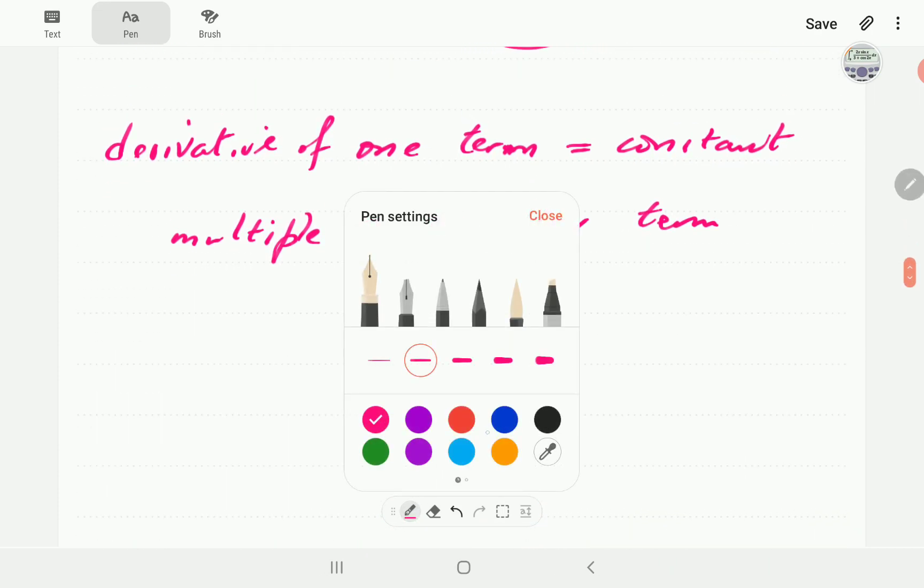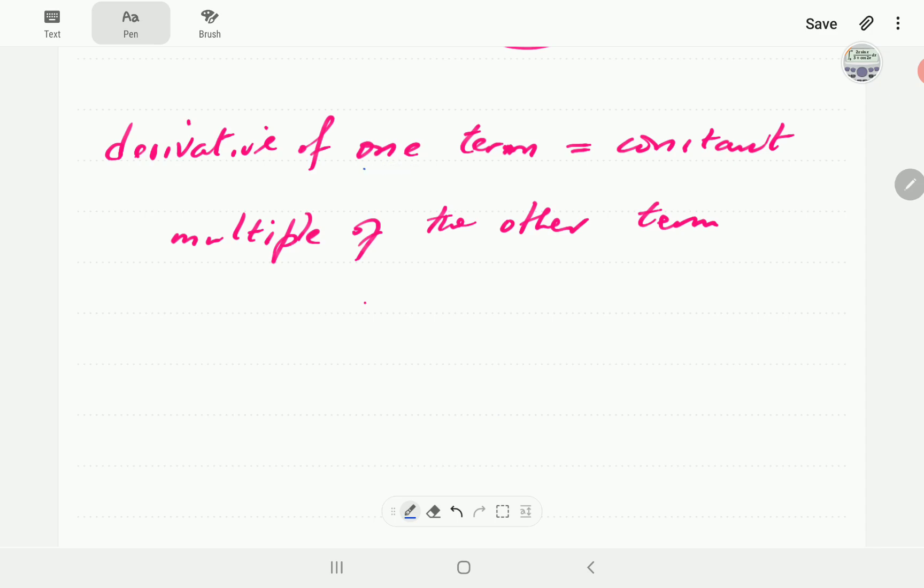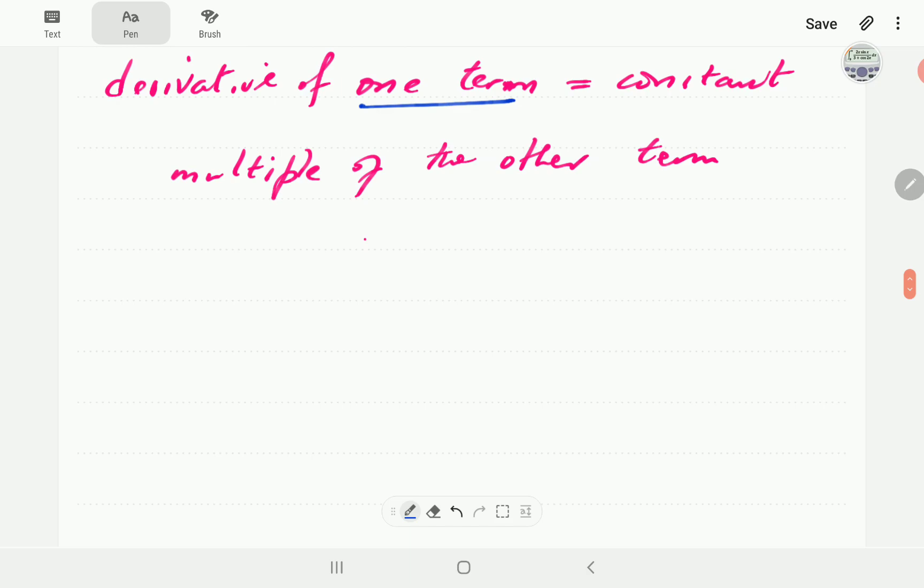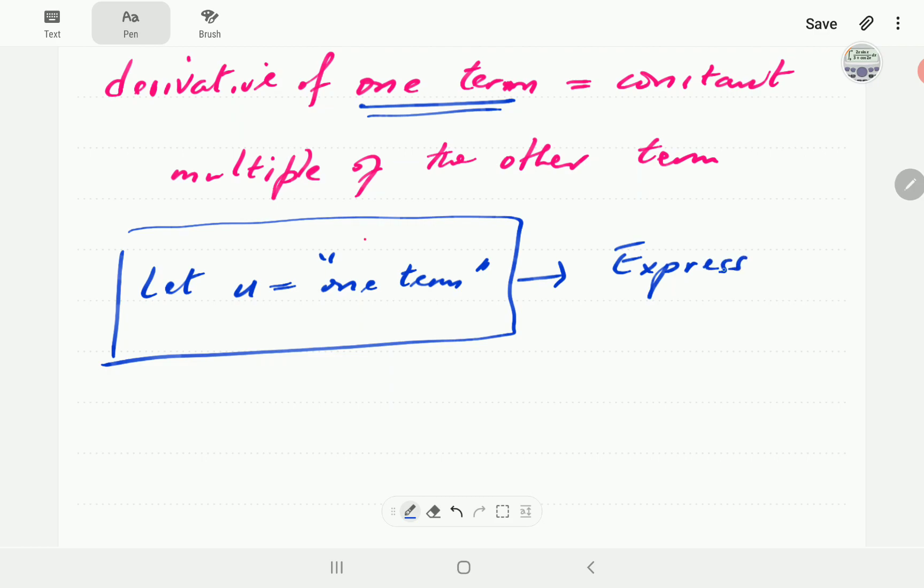So, whenever this happens in the method of u-substitution, we let this term be equal to u. We're going to do this in a flow diagram. So, what we do is we let u be equal to what I'm going to call the inner term here. And then, after we have done that...